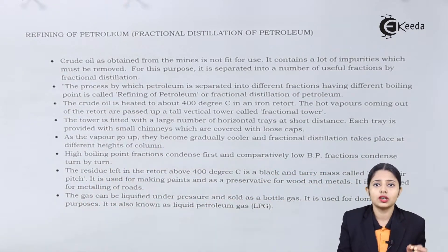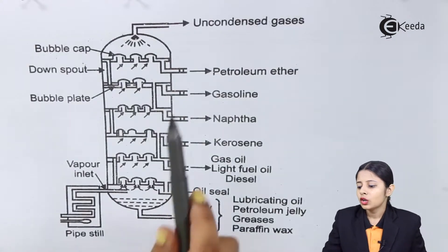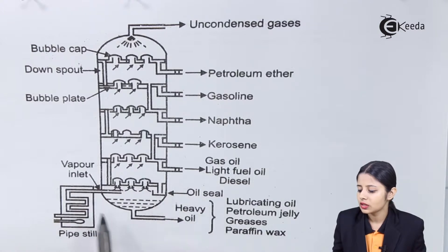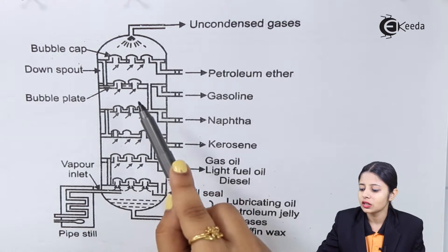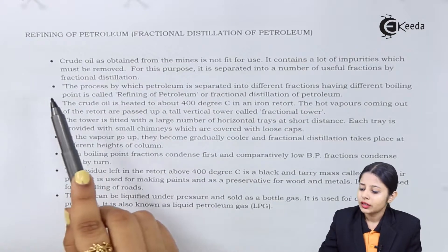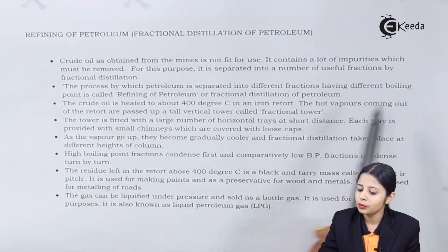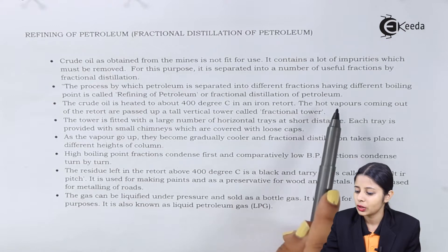This fractional distillation process is done in a chamber in which we have fractions divided into it. Fractions are nothing but small parts of it. The process by which petroleum is separated into different fractions having different boiling points is known as refining of petroleum or fractional distillation of petroleum.